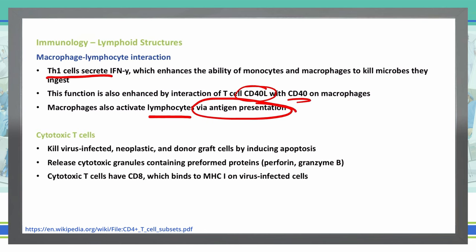Cytotoxic T cells are also involved, as they kill virus-infected cells, tumor or neoplastic cells, and donor grafts by inducing apoptosis. This is a key point: cytotoxic T cells kill by apoptosis. There are many different ways immune cells can kill various structures, diseases, viruses, and bacteria — but cytotoxic T cells work specifically by inducing apoptosis.